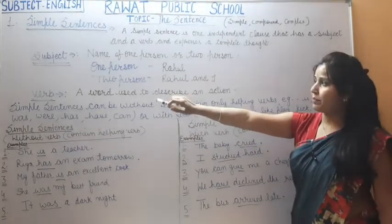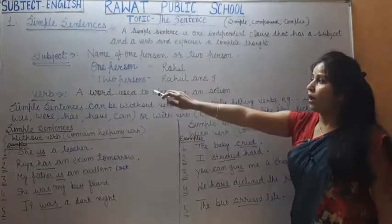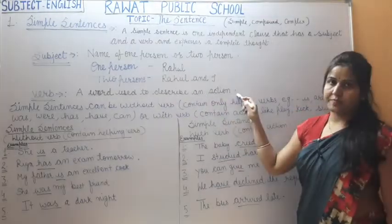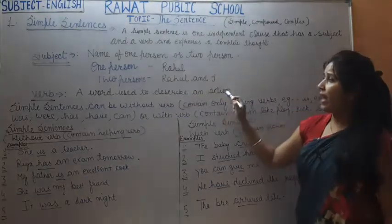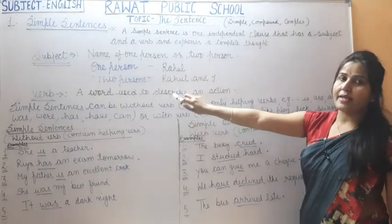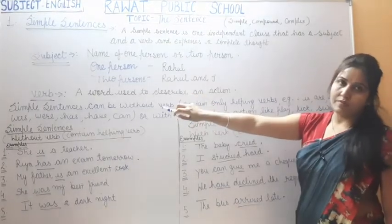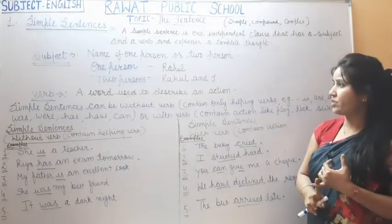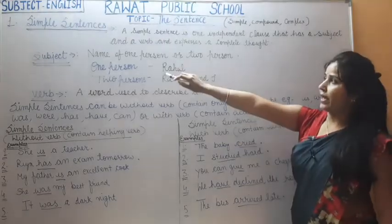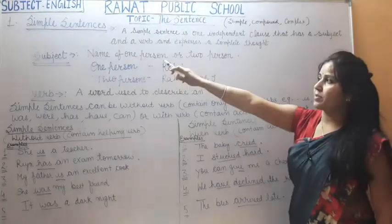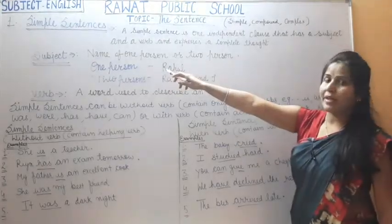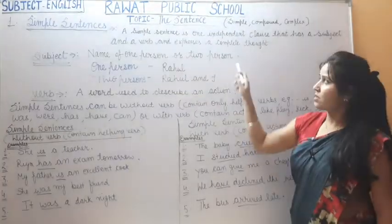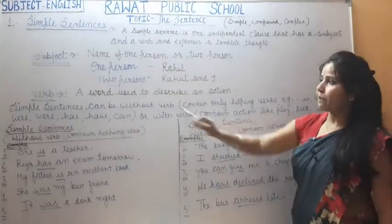Now what is a verb? A word used to describe an action — that is called a verb. Verb वो होती है जो एक action को describe करती है. So in a simple sentence, what do we write in subject and what do we write in verb — now this should be clear to you.